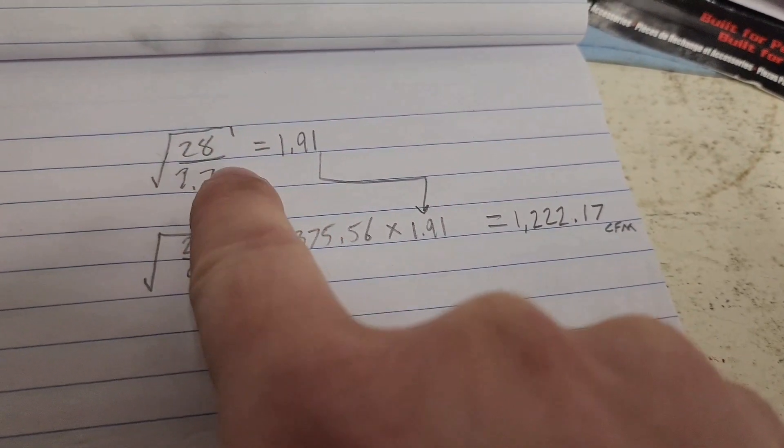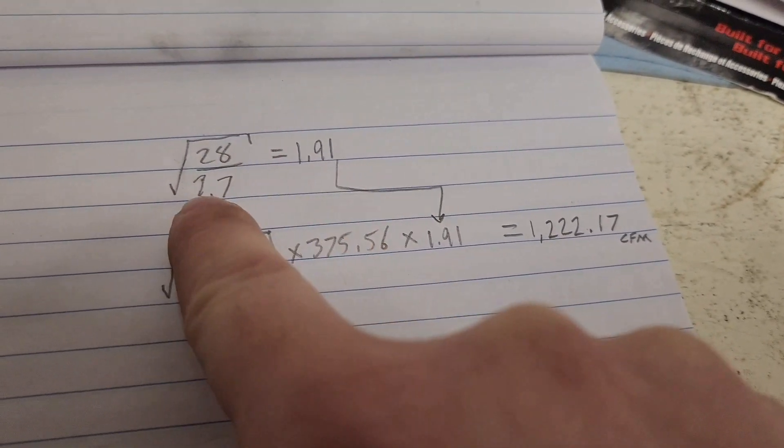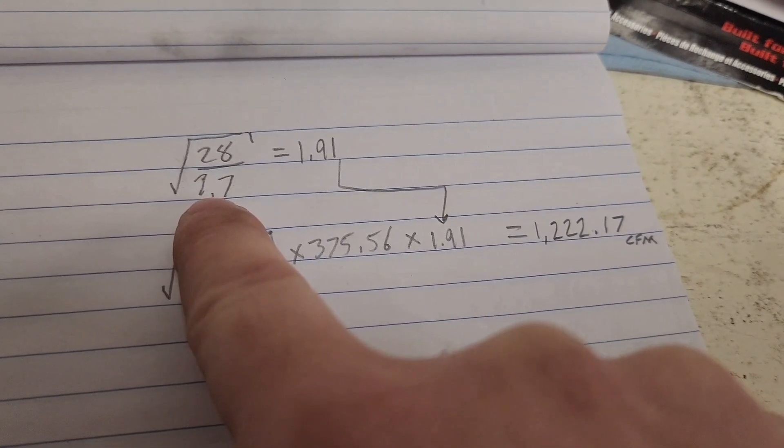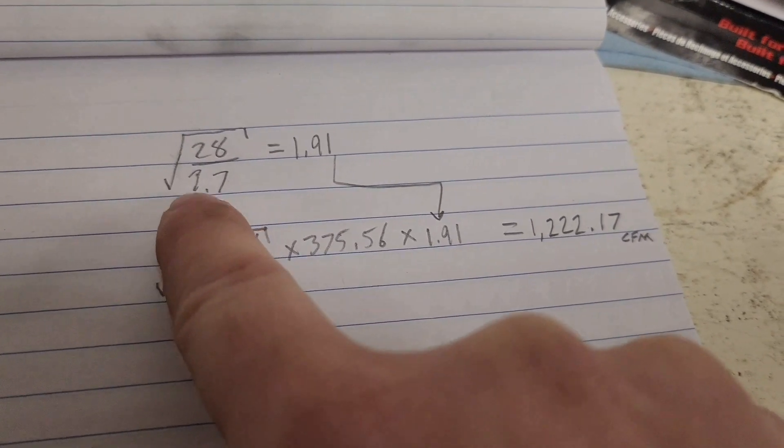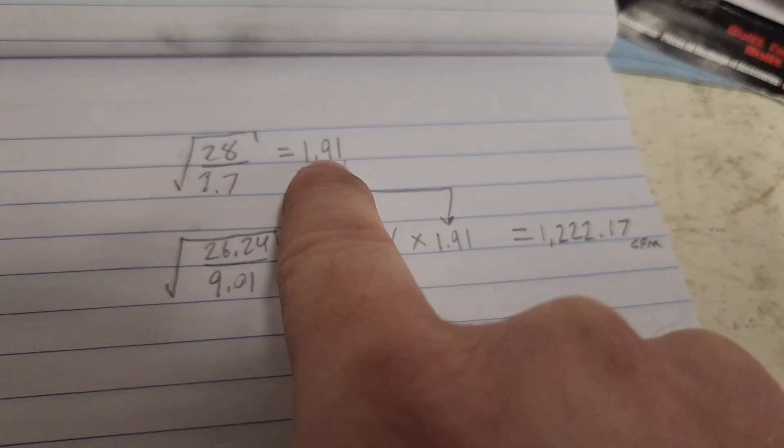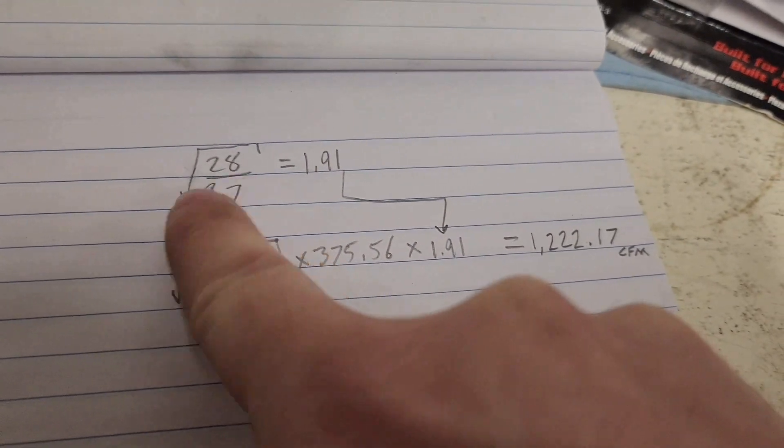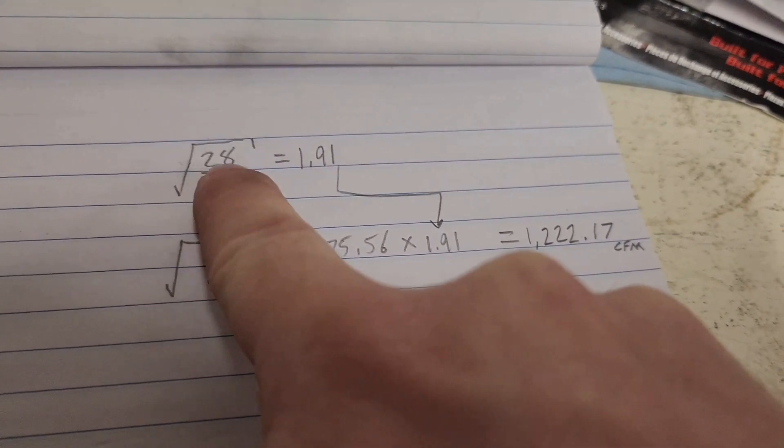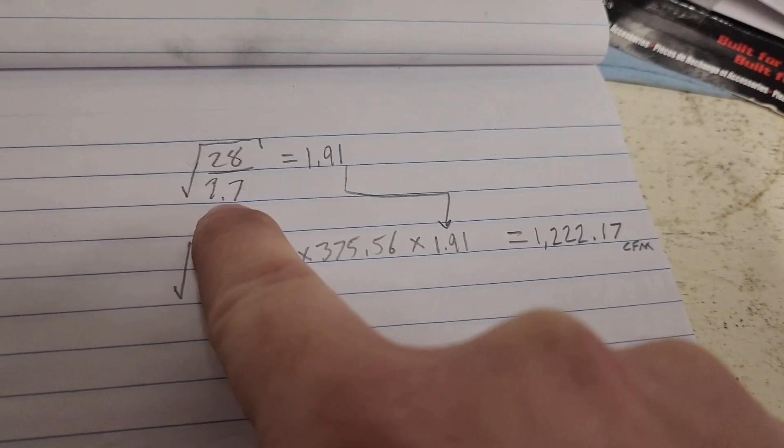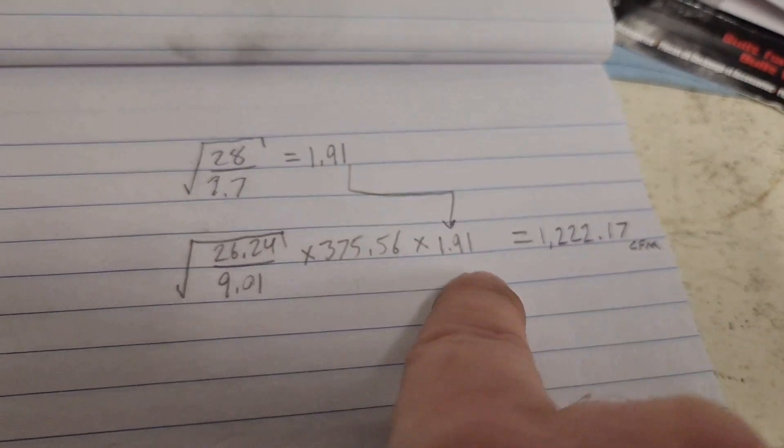So this first formula is to get your correction factor. I cannot pull this thing to 28 inches of water even with six of those motors. So I got to get it up to 28 inches of water. So you do the square root of 28, which is what you want it to be at, divided by what it actually was to get you a correction factor.